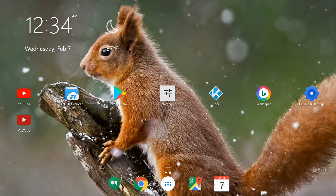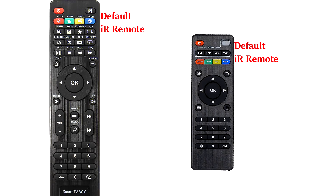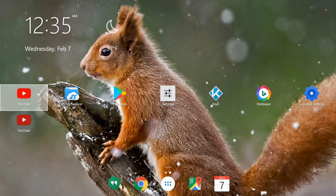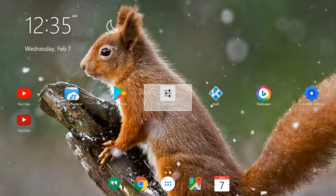Now I'll show you how to stop background apps with the default IR remote. You can see the two default IR remotes that come with almost all Android boxes. I'm on the main screen of my Android device, and on the IR remote I'll use the up and down arrow keys to navigate.